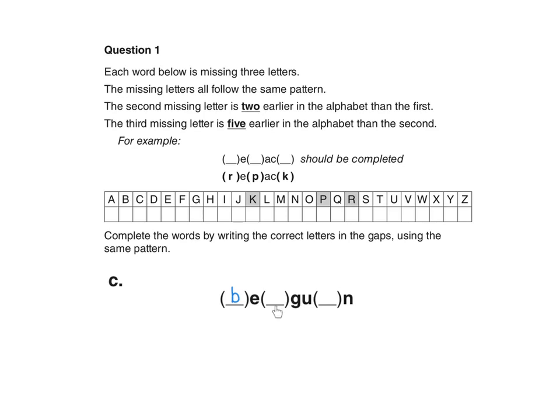So let's consider what this letter will be if we know that this one is B. We know that the first letter comes two after the second letter. So if we're saying that B is the first letter, then we would have to count backwards two, one, two, to find the second letter. We can do it this way because we've been told that the second missing letter is two earlier in the alphabet than the first.